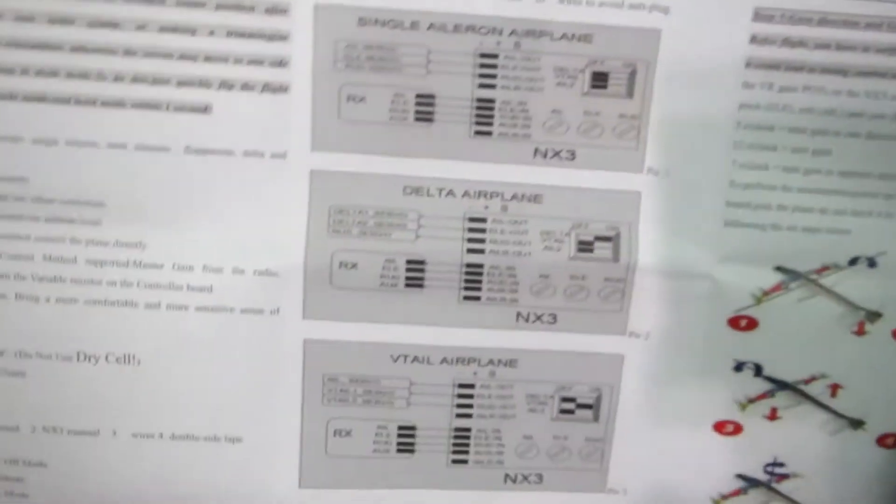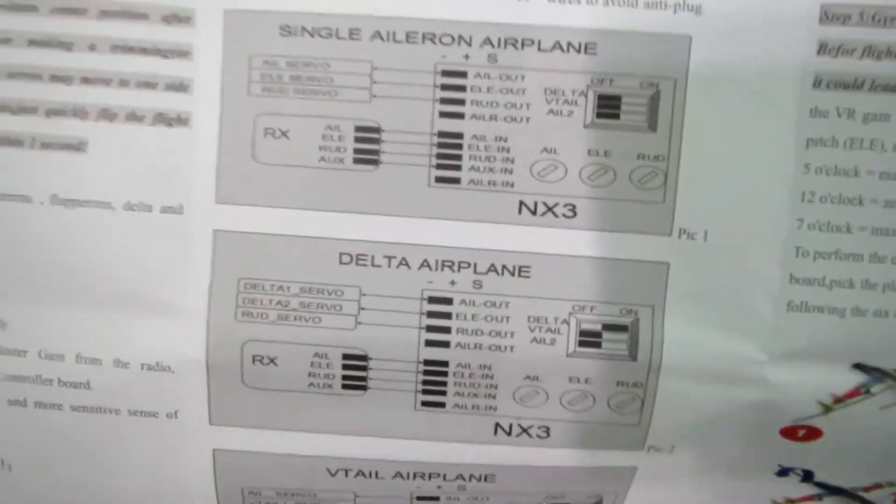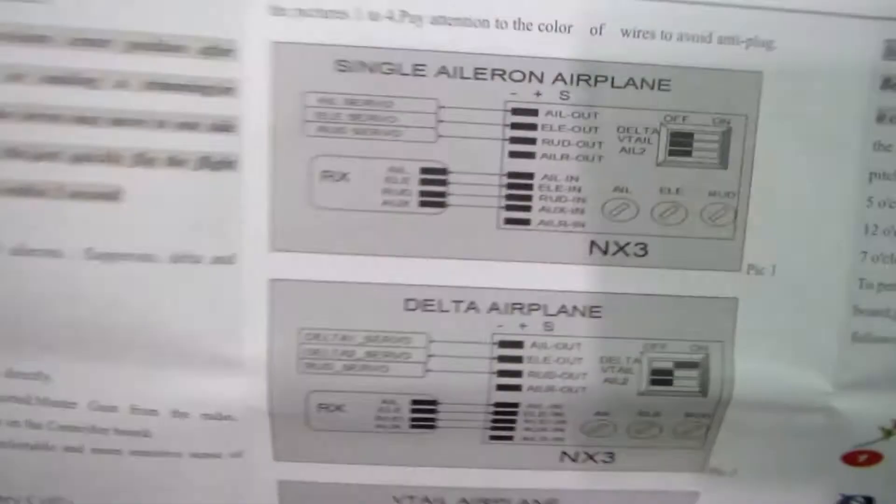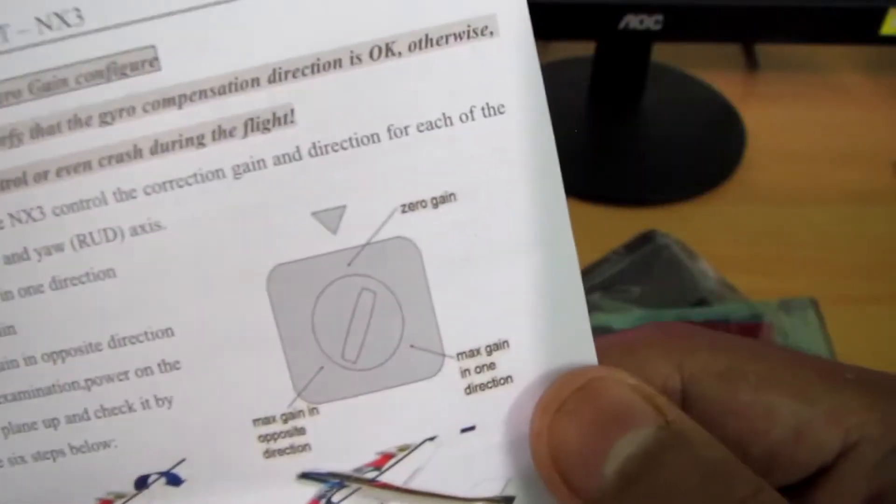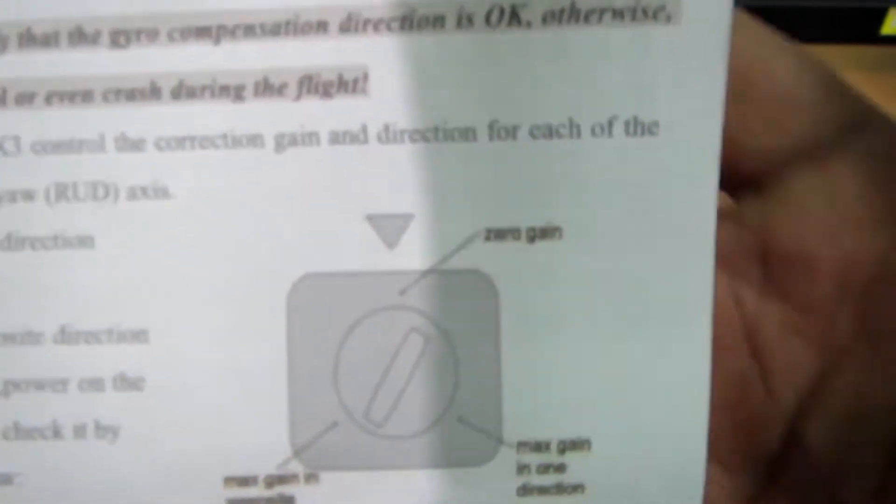You can see here some picture layout that tells you how you can connect this module with different types of models, like single aileron, delta wings, V-tails, etc. And this is the diagram showing how you can set your gain.